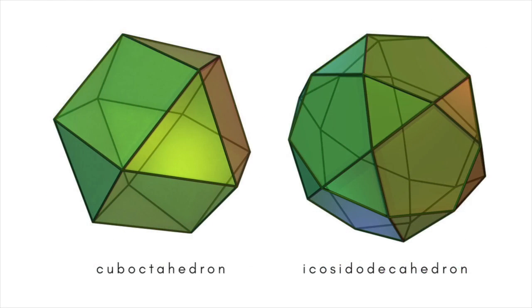A quasi-regular polyhedron is the solid region interior to two dual-regular polyhedrons. Only two exist: the cube-octahedron and the icosidodecahedron.